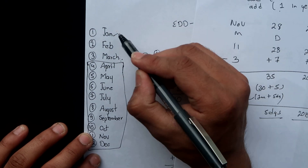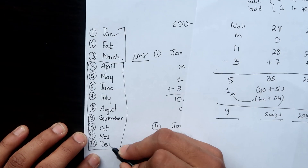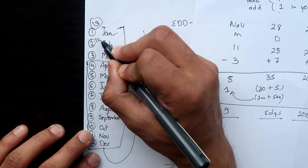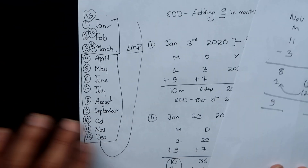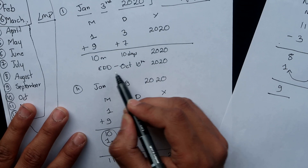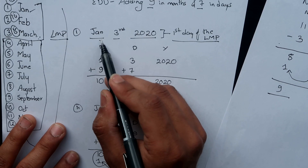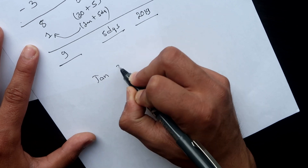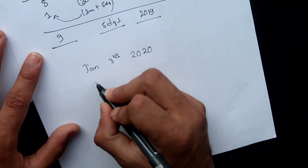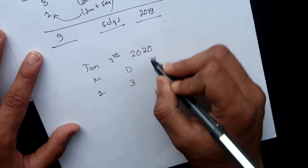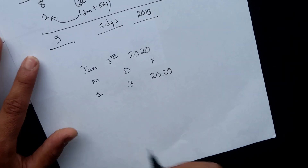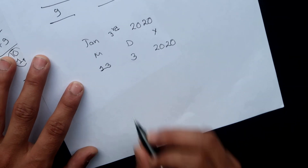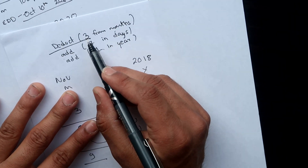You can apply this same formula for January, February, and March as well, but you need to consider them as extended month numbers. If December is month 12, then January becomes month 13, February becomes month 14, and March becomes month 15. Let's take the January 3rd, 2020 example where we got an estimated date of delivery of October 10, 2020. In MDY format: Month = 1, Day = 3, Year = 2020. Since it's January, we write 13 instead of 1.